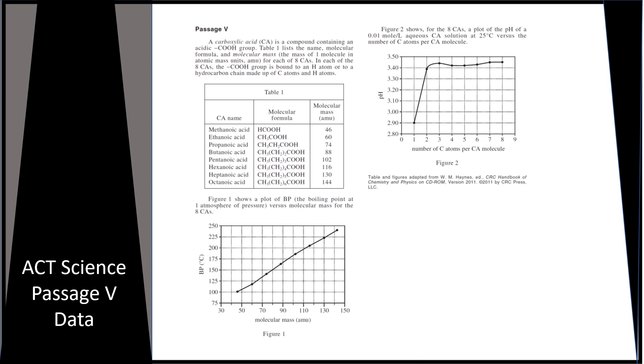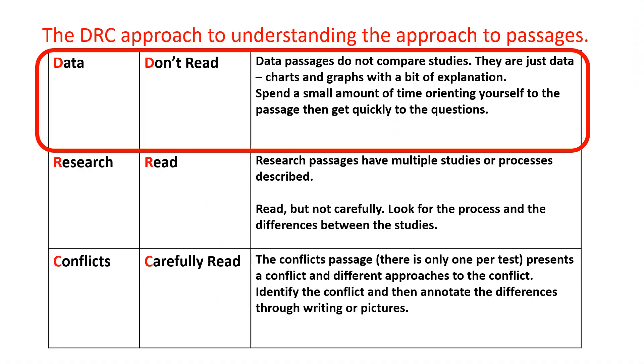This is ACT Science, passage 5. It's a data passage. We know it's data because it's only presenting charts and graphs and information. For our DRC approach, data means don't read. Maybe spend a small amount of time orienting yourself to the passage, but quickly get to the questions. The questions will generally tell you where to look. You don't have to have a deep understanding.